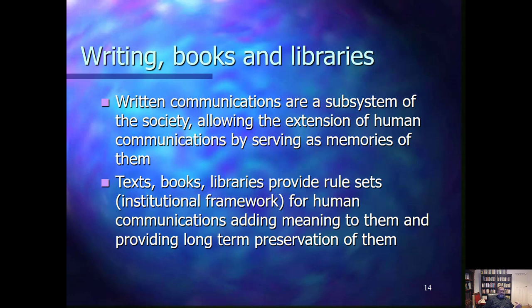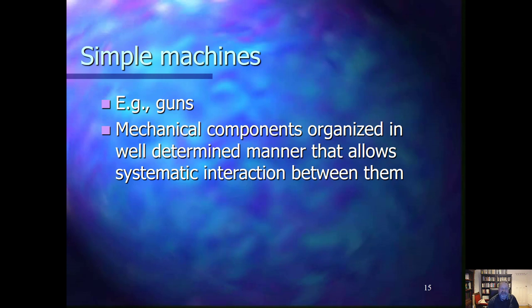Texts, books, libraries, journals, and so on provide additional frameworks — additional rule sets, institutional frameworks in the context of written communications — which constrain these and, by referencing this institutional framework, add meaning to them and ensure longer preservation of the communications. After concluding that written communications are part of society and form a subsystem — in particular, a subsystem of the memory subsystem of human society — let's move on to consider machines.